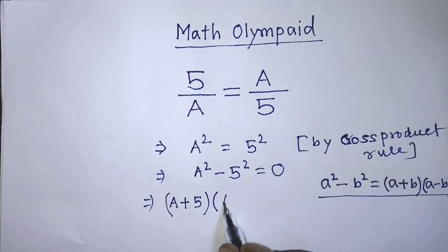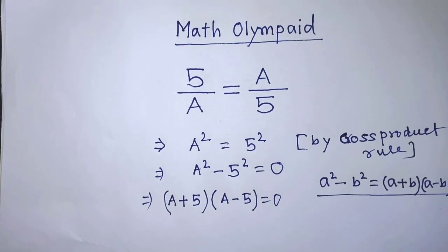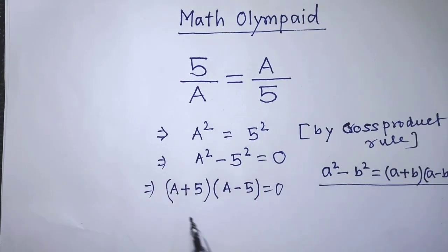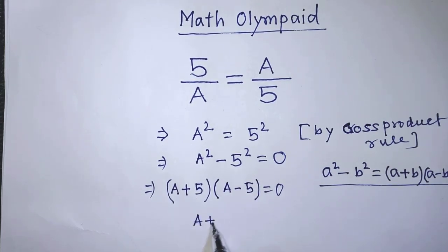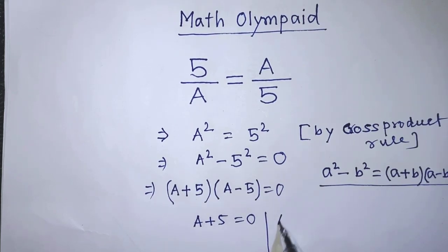According to zero product rule, we can write from this equation A plus 5 equals 0 and A minus 5 equals 0.